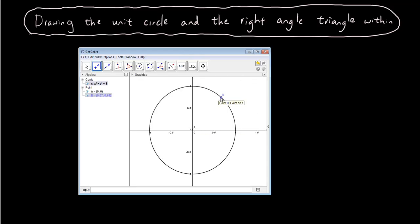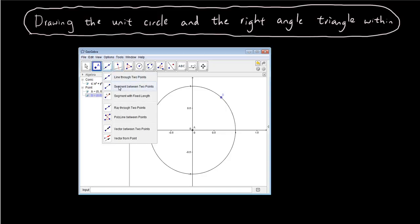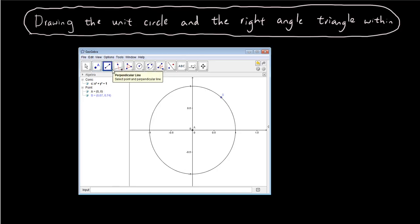So draw a point. And what I'm going to do is click on Segment between two points, this tool here, and I'm going to join up point B with the center.